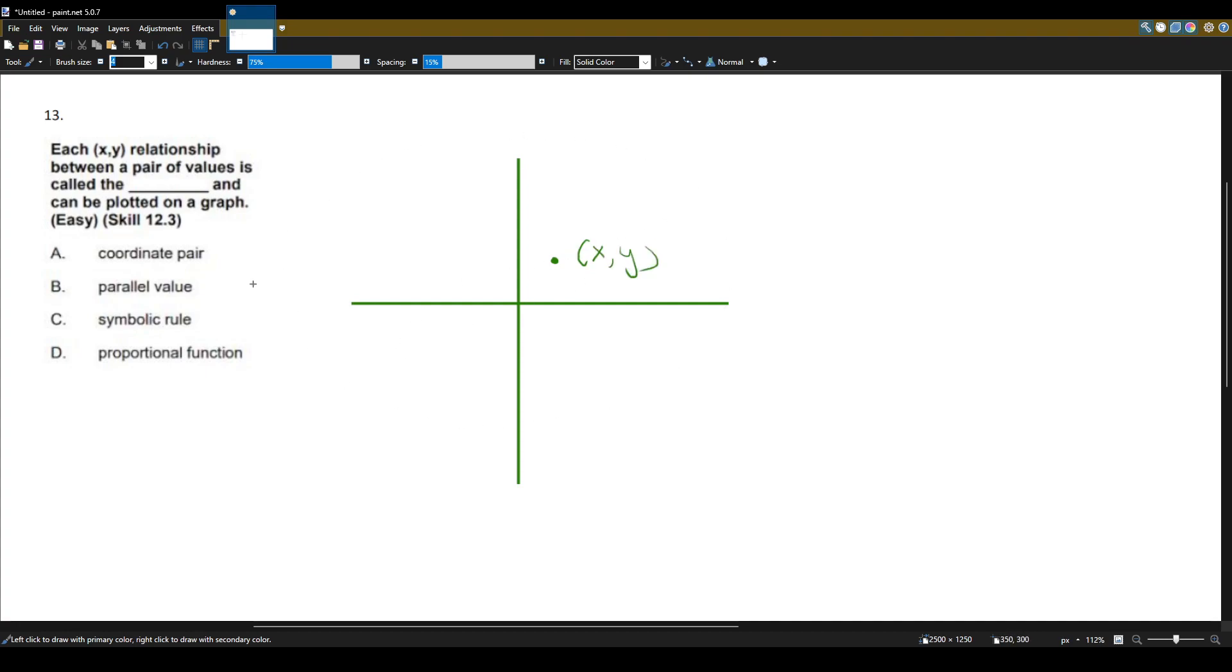Another word for the graph that we plot points on is called, here's a keyword, the coordinate grid or coordinate plane. So, this point is a coordinate.